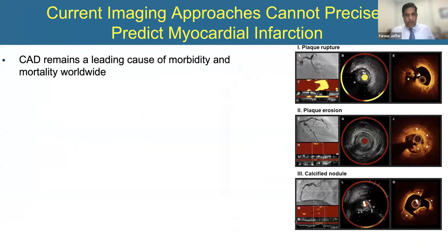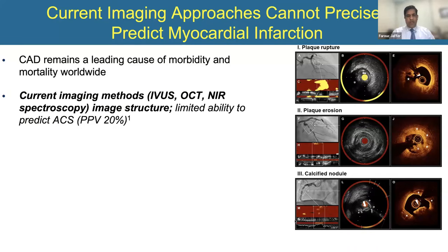The foundation for this work is underscored by the fact that we cannot precisely predict acute myocardial infarction in a way that's actionable — that would allow us to do something differently than just aggressive secondary medical prevention with standard guidelines. While we have great technology that's evolved in the last 20 to 30 years — IVUS, OCT, high-resolution NIR spectroscopy — our ability to predict acute coronary syndromes and plaque progression has been limited to a positive predictive value of 20 to possibly 40%.